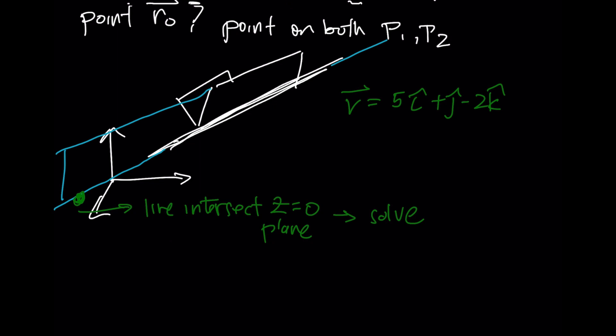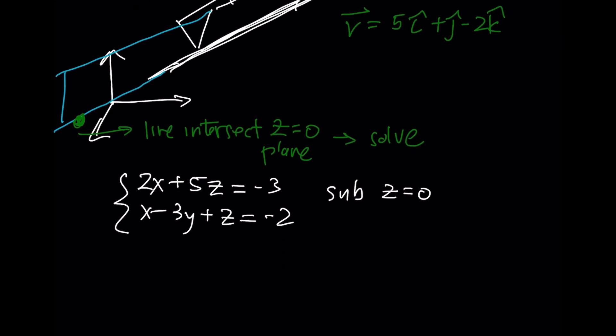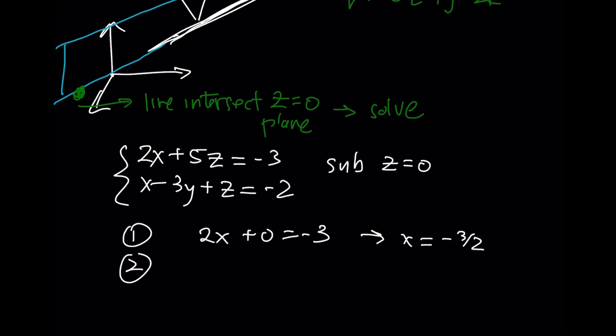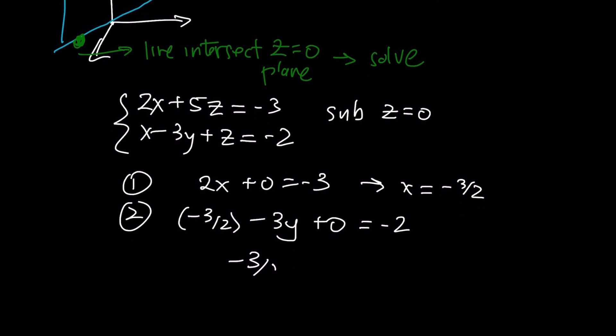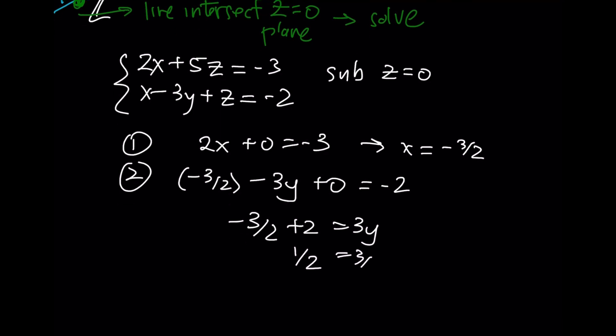To do this, we're going to go back to the scalar equation of the lines and try to figure out what the x and the y are when I sub in z = 0. From equation 1, I'll have 2x + 0 = -3. So that means x = -3/2. From the second equation, I'm going to plug in that -3/2. I'll have -3/2 - 3y + 0 = -2. So that means -3/2 + 2 is 3y. That means 1/2 is 3y. And that means y = 1/6.